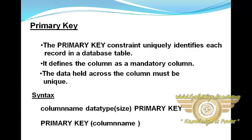For the column level, the syntax is: column name, data type, size, and PRIMARY KEY. PRIMARY KEY is a keyword. For the table level, the syntax is: PRIMARY KEY followed by the column name.